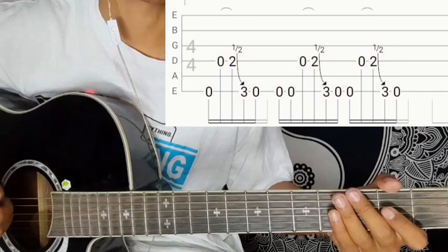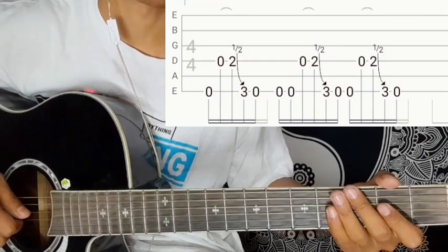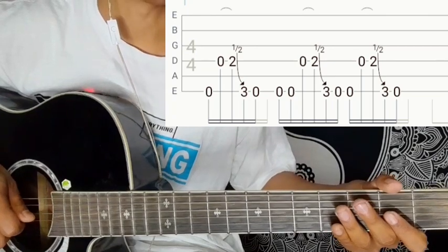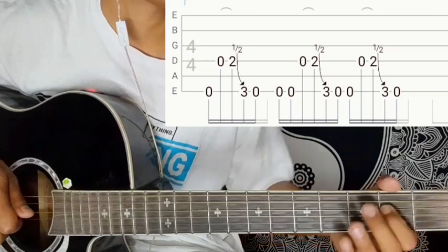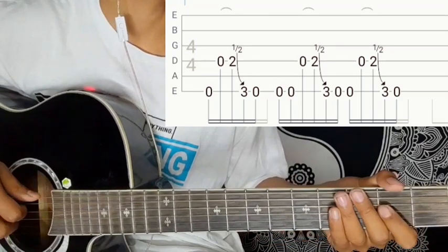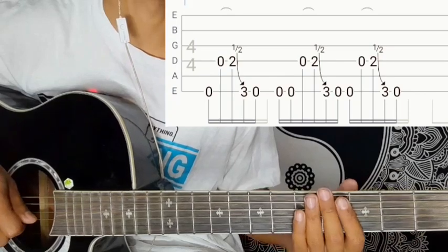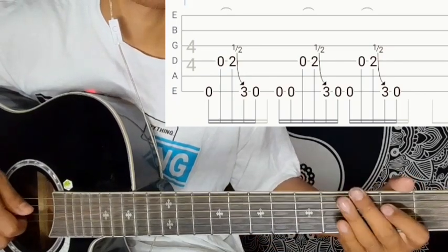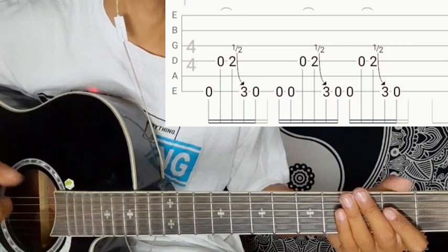Fourth string open, hammer-on, bending, then sixth string open and third string open. Repeat it, then back to E minor.